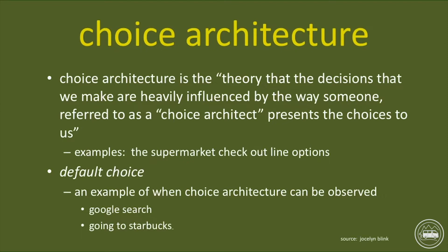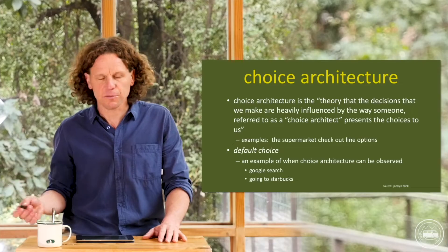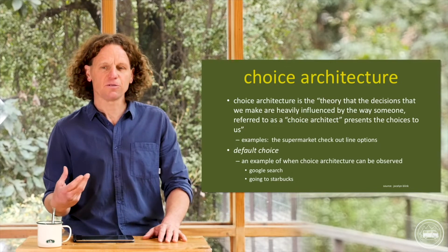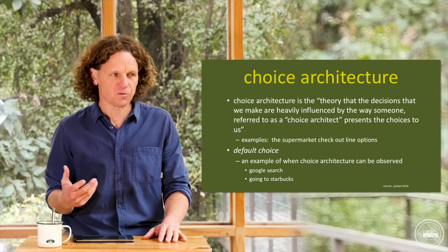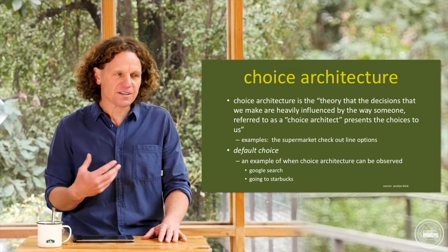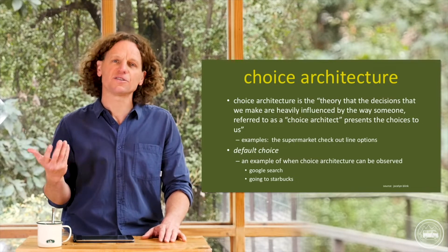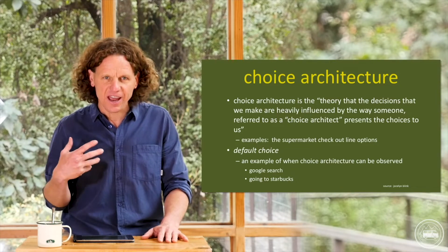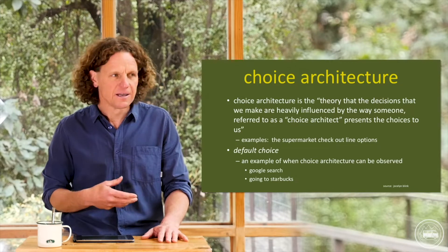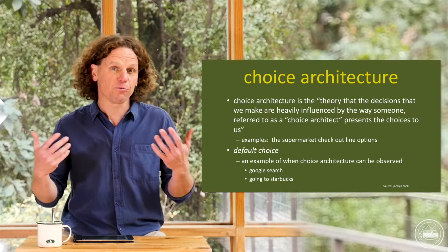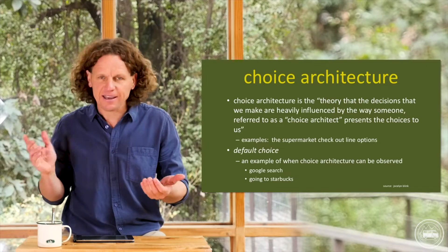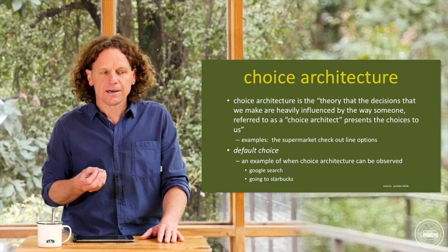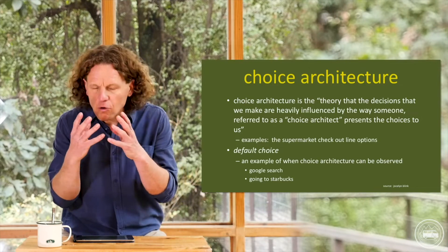An example is like in the supermarket checkout line. Our choices are made based on the things that we see. Advertising is an entirely huge construct of choice architecture — they create these ideas in our heads that we will be cooler if we have certain products. Apple iPhones, iPads, MacBooks — they're all designed around this idea of being cool, and that's a form of choice architecture.